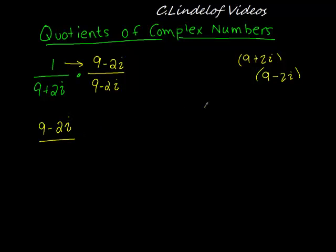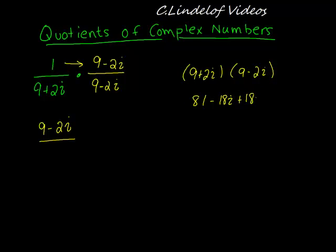When I multiply the bottom out, when I do FOIL here, it looks like this. And I don't usually do it out, but let me just do this out really quick. Then I get 9 plus 2i times 9 minus 2i, and I get 9 times 9, 81 minus 18i plus 18i.